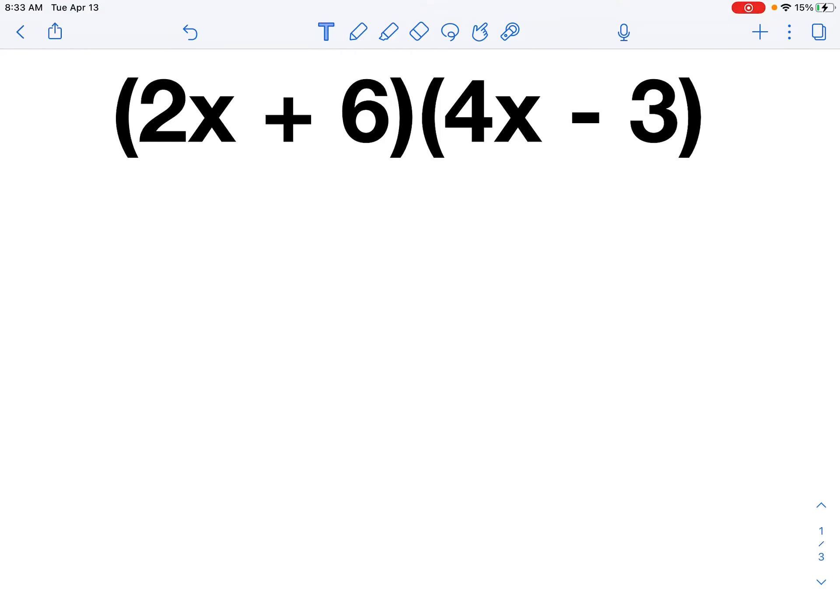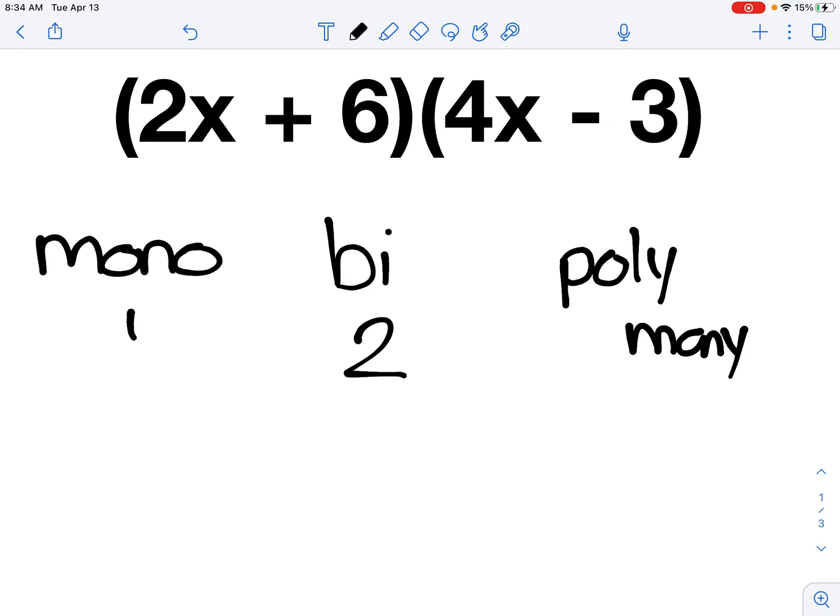Hi again, everybody. In this video, we're going to be talking about multiplying by a binomial. We already talked about how a monomial means it has one term. A polynomial means that it has many terms, but a binomial means that it has two terms. So something like this, 2x plus 6, is a binomial because it has two terms, the 2x and then the plus 6.